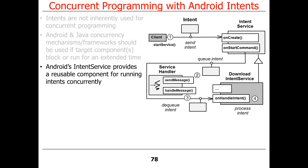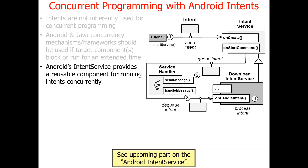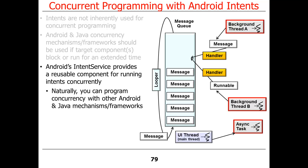Android provides something called an intent service — a reusable component that automates starting up services to process intents running in a background thread. We'll talk about them later in the course. There will probably be a programming assignment where you write the intent service version of assignments three and four. You can also use the Android Handler framework, the Android AsyncTask framework, or spawn Java threads in conjunction with the Handler framework when you need things to run concurrently.